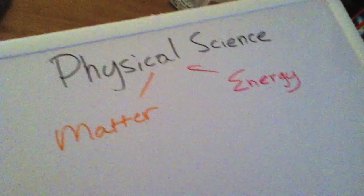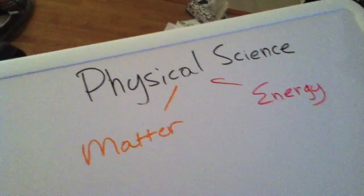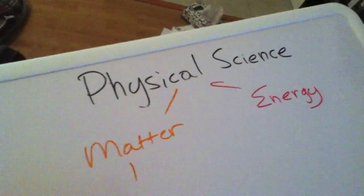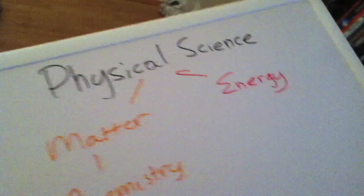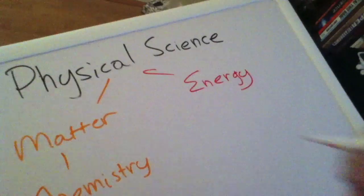Now for the sake of middle school science we're going to break this up into two units. The matter unit is what we're going to call chemistry, and the energy unit is what we're going to call physics.